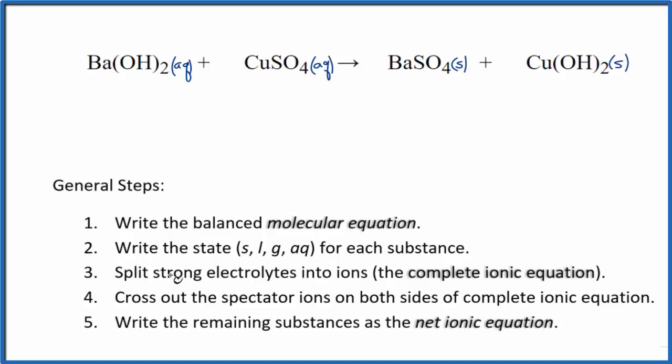Next, we need to split the strong electrolytes into their ions for the complete ionic equation. So for barium, barium's in group 2, that'll be 2 plus, and the hydroxide here, 1 minus. So we have Ba²⁺, I'll write the states later, plus we have these two hydroxide ions. So 2 OH⁻.